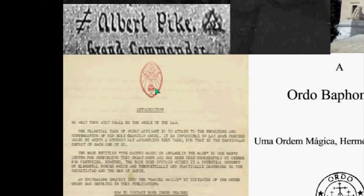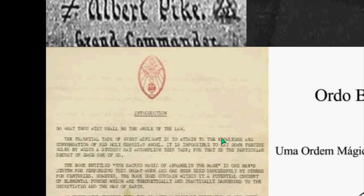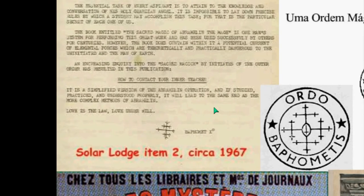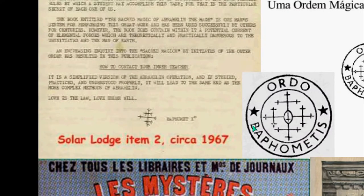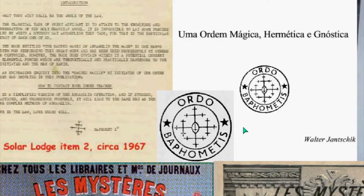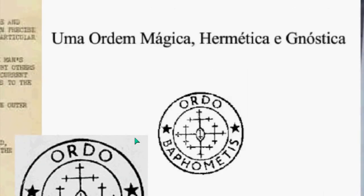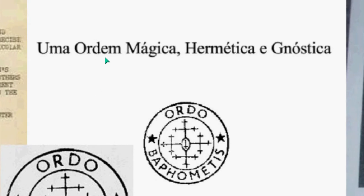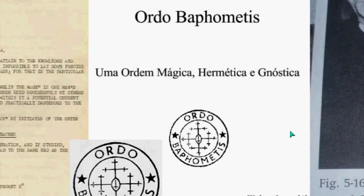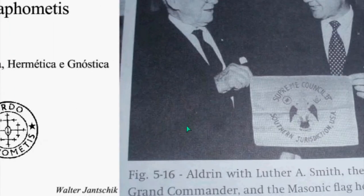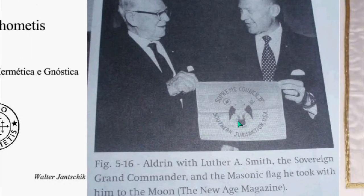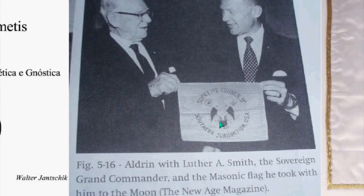Moving on to literature or correspondence of the Ordo Templi Orientis. You can see this typed out and Baphomet now with a handwritten symbol there. Ordo Baphometis — you can see the down-pointing cross as well in the center. Uma Ordo Magic, Hermeticism, and Gnosticism — those are all interrelated. We'll understand in the religious section in Part 2 where those originate from.